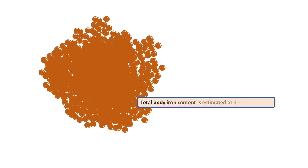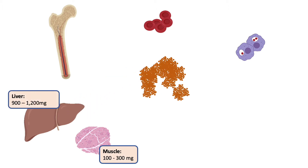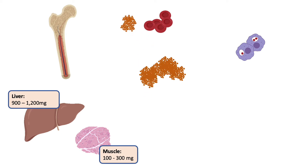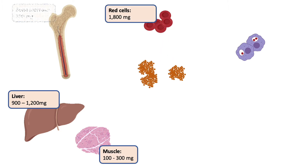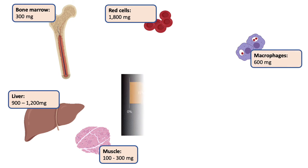The human body contains about 3 to 4 grams of iron. Of this, about one-third is present in muscle and liver as myoglobin and ferritin. The majority of the remaining two-thirds of iron is found in red cells, either in circulation, as developing red cells in the bone marrow, or as dying red cells in the spleen undergoing destruction.